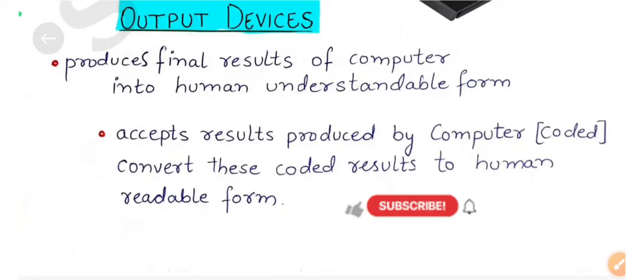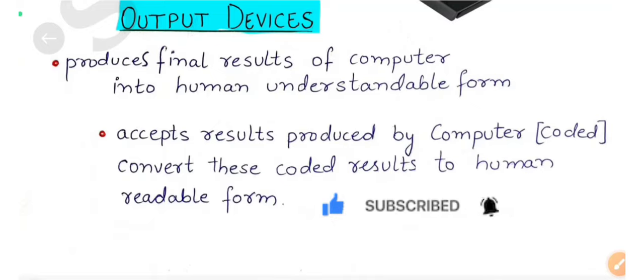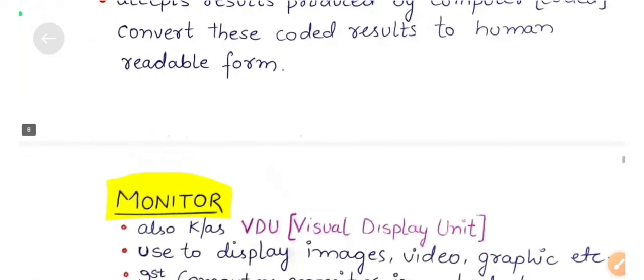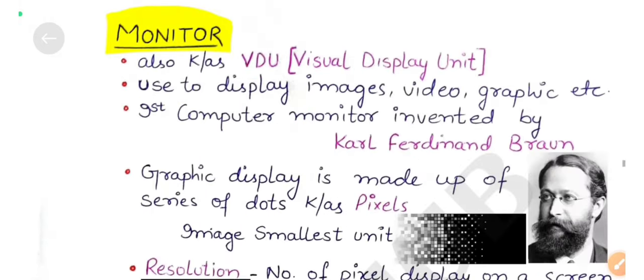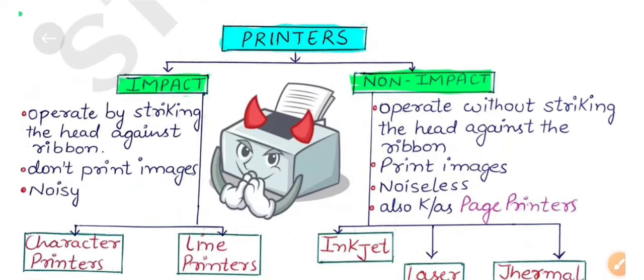Hello everyone, welcome back to our YouTube channel. Today we are going on our topic of output devices. We have covered some output devices, and in today's lecture we will cover all the devices. So what are the output devices? Output devices are the devices that show us the final results into human understandable form. After that, we covered the monitors. After that, we have covered the printers.